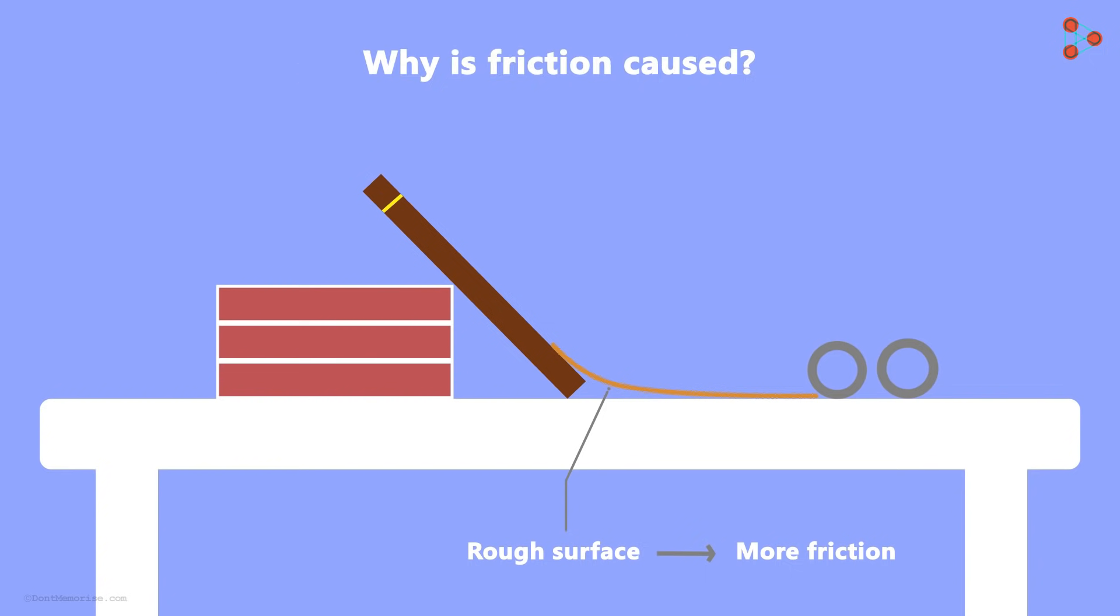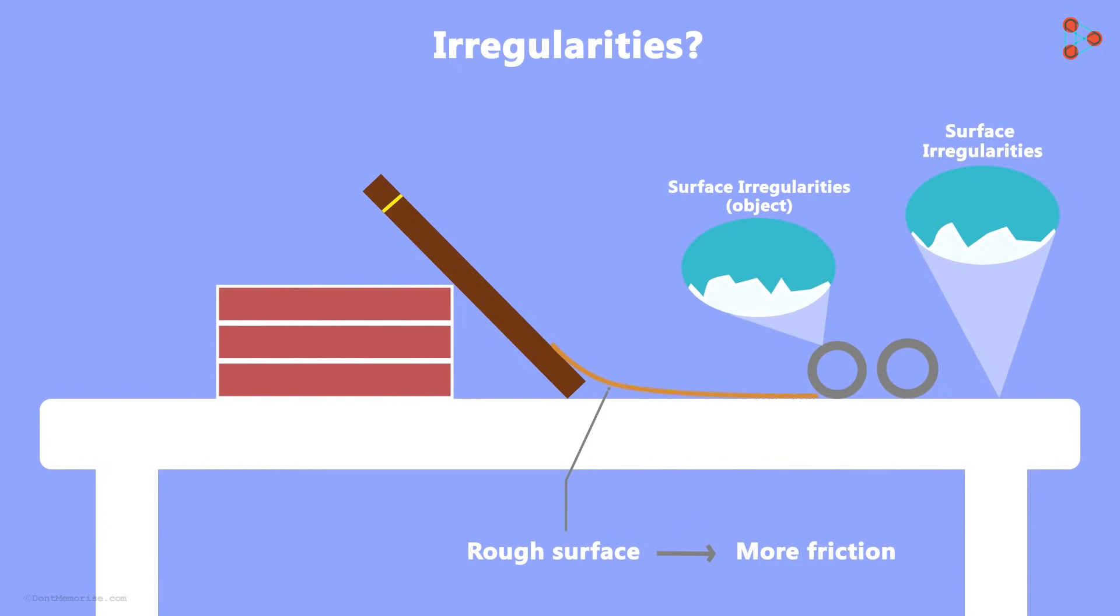Why is friction caused though? It is caused due to the irregularities on the two surfaces in contact. What do I mean by irregularities? Even though the table looks smooth, if we zoom into the surface, we will see surface irregularities. Even the surface of the object has irregularities. Though they are minor,